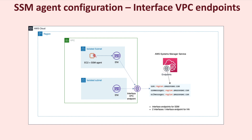AWS Systems Manager uses three endpoints: the SSM endpoint, which is the entry point or the health check endpoint; EC2 messages, which enables document execution against managed nodes; and SSM messages, which enables the Session Manager feature with SSM. When an interface endpoint is created, a corresponding network interface with a private IP is created in the chosen subnets.